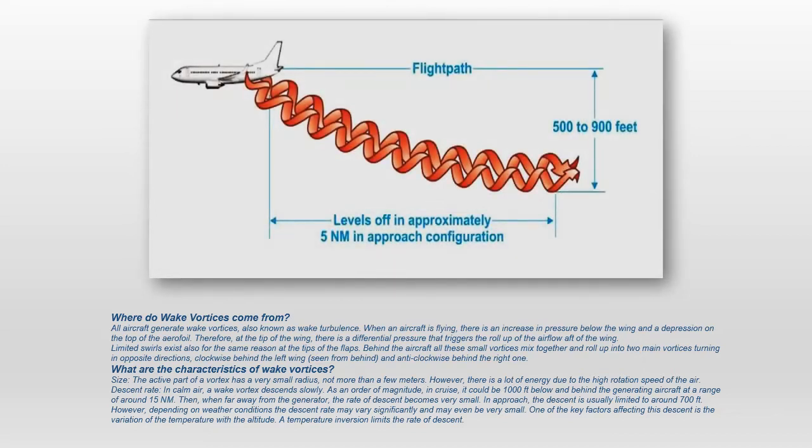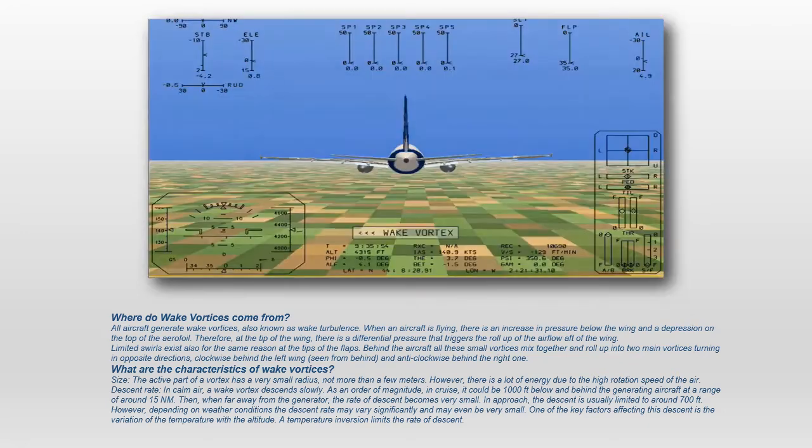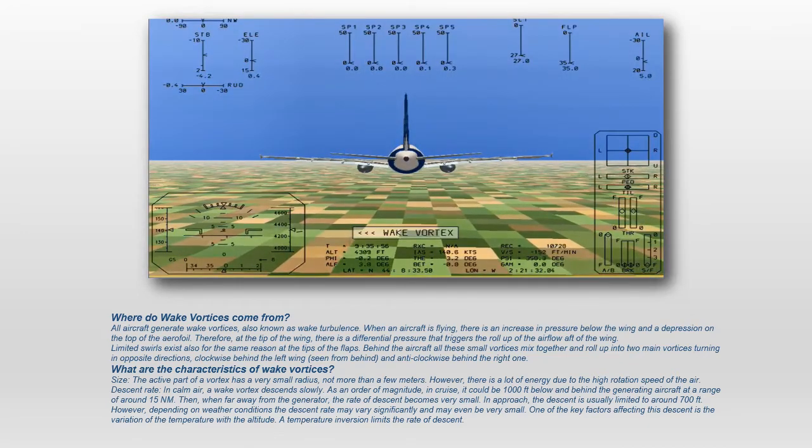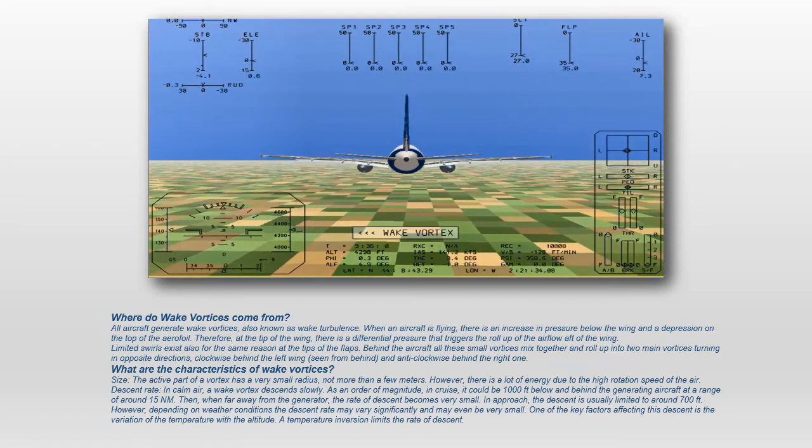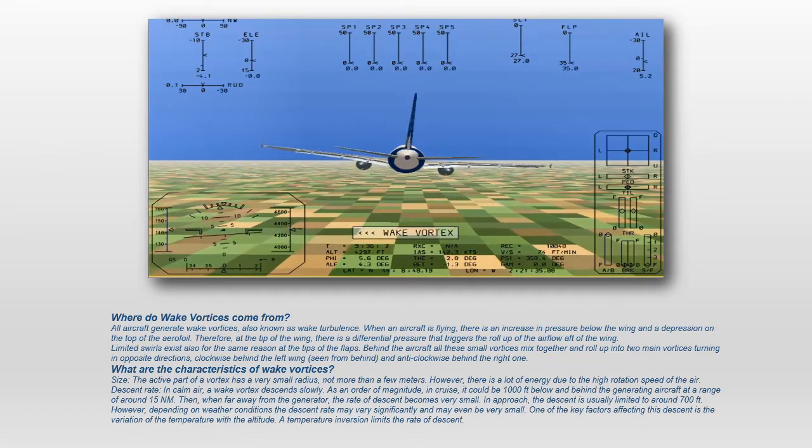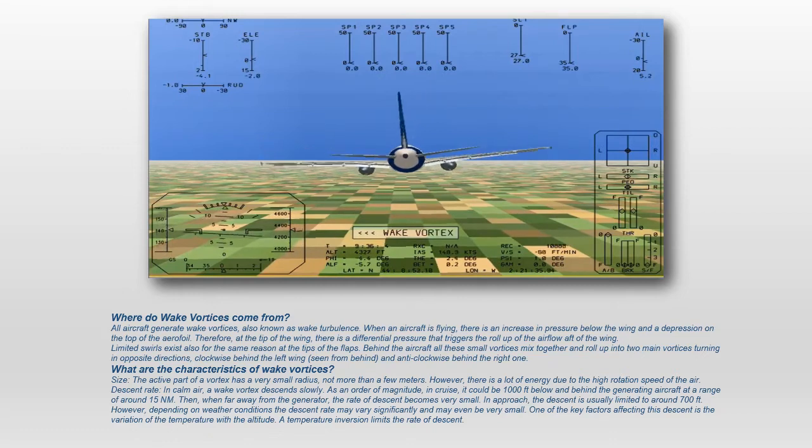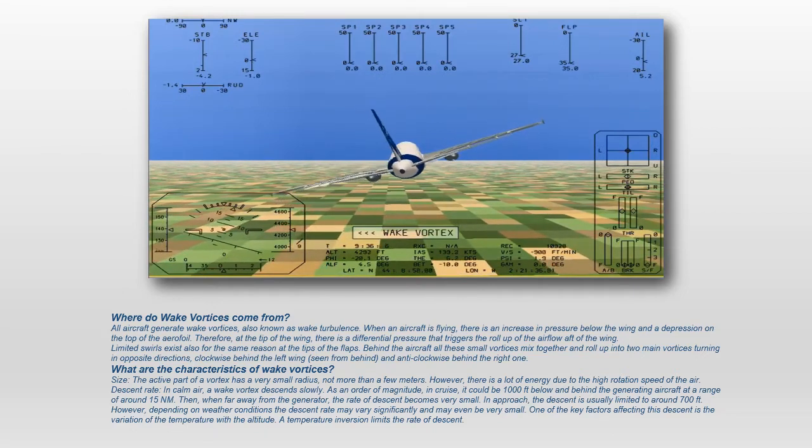What are the characteristics of wake vortices? Size – The active part of a vortex has a very small radius, not more than a few meters. However, there is a lot of energy due to the high rotation speed of the air. Descent rate – In calm air, a wake vortex descends slowly. As an order of magnitude, in cruise, it could be 1,000 feet below and behind the generating aircraft at a range of around 15 nautical miles.